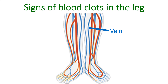Veins have a bluish colour as they contain blood with lesser oxygen content, returning to the heart and lungs for oxygen enrichment. Blood moves in them when the muscles contract over them — that is, when we walk about or move our limbs.